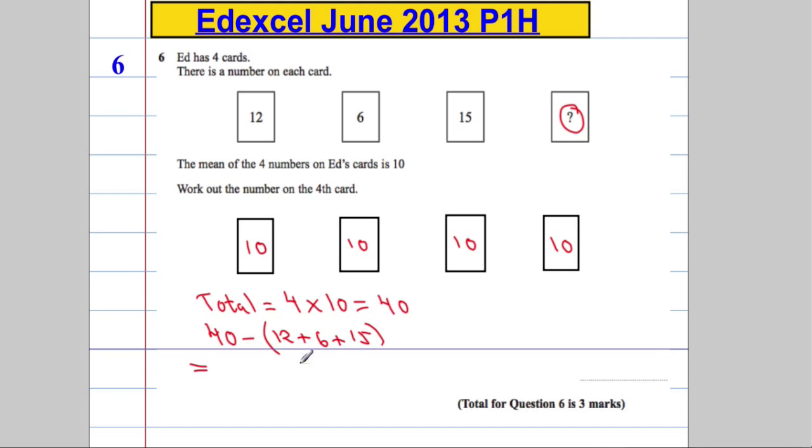12 plus 6 plus 15, what's that going to be? Let's see. 18, 28, I'll make it 33. And 40 take away 33 is 7.